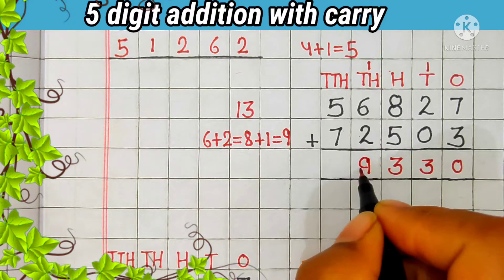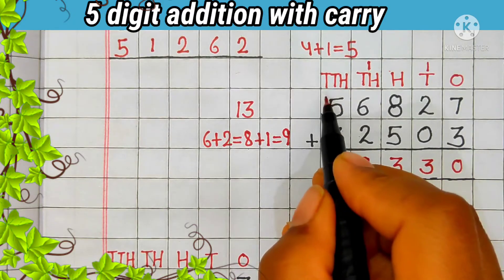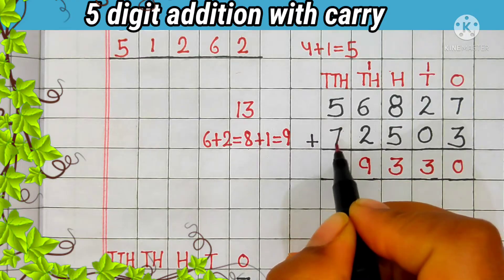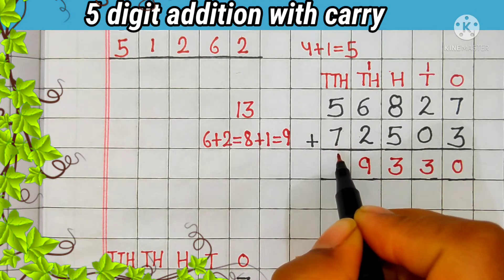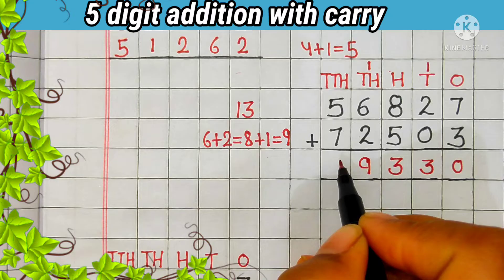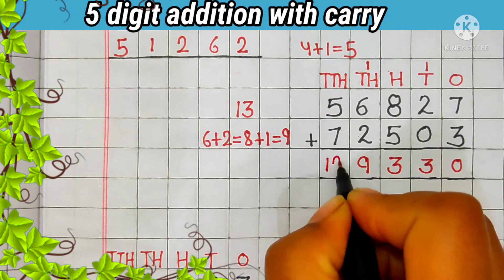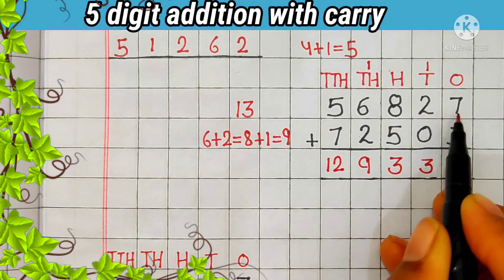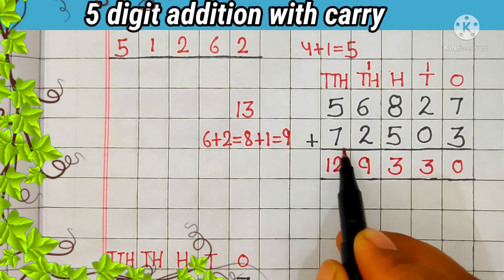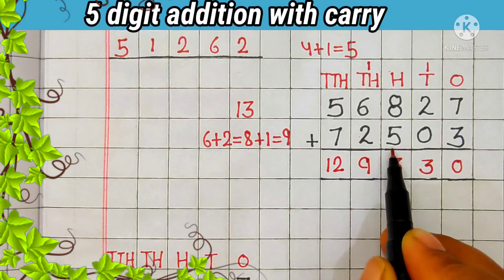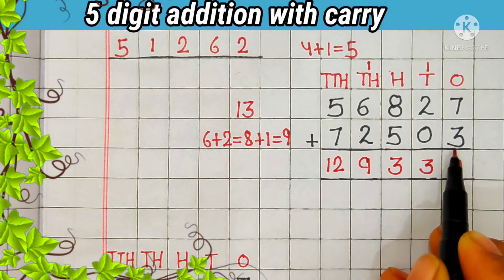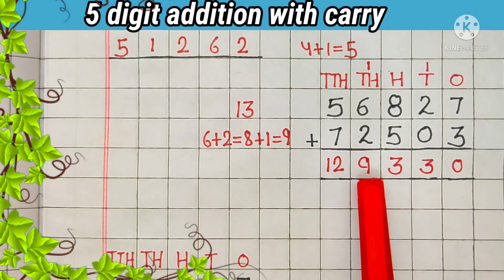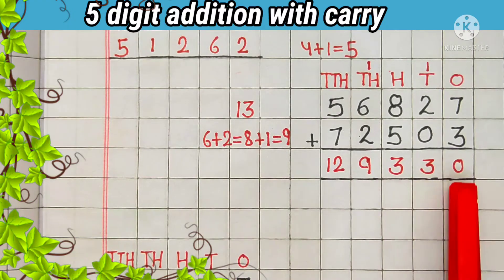Then let's add the digit at the 10,000s place. 5 plus 7 is equal to 12. So 56,827 plus 72,503 is equal to 1,29,330.